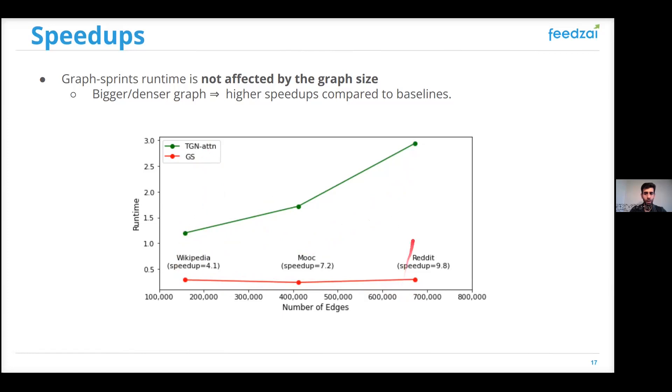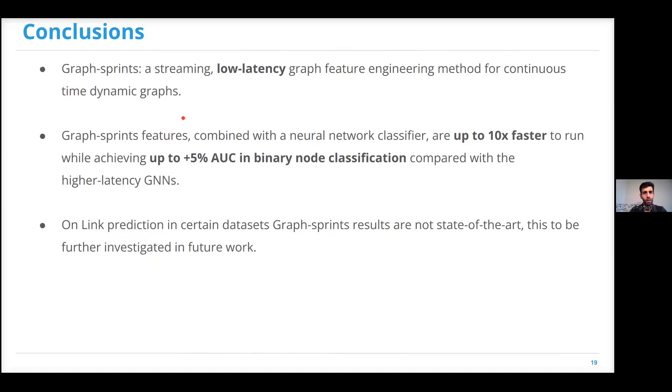To conclude, in this paper, we present Graph Sprints, a streaming low-latency graph feature engineering method for continuous-time dynamic graphs. Our experimental results show that in the node classification task, we could be up to 10 times faster, while achieving up to 5% increase in AUC, compared to higher latency graph neural networks. On the link prediction task, and in certain datasets, our results were not state-of-the-art, and this is to be further investigated in future work.